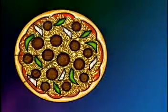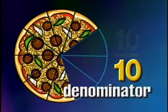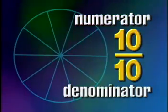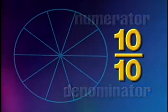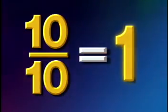Even a whole number can be written as a fraction when you put it over the number one. Any fraction with the same numerator and denominator is equal to one. If Norbert had ten slices in the whole pizza, that is the denominator, and if he ate ten of them, that is the numerator. The resulting fraction would be ten tenths, or ten divided by ten, and that equals one whole pizza.